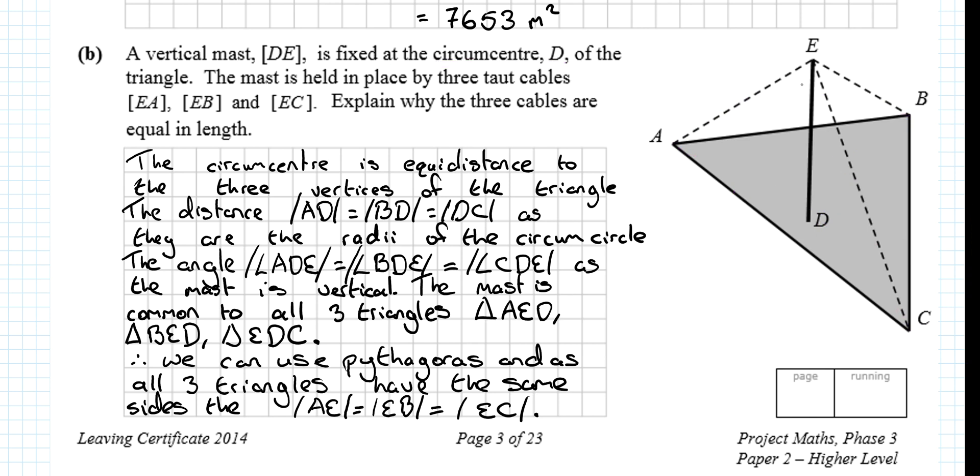Talking through what it wants. Explain why the three cables AE, EB, and EC must be the same length. The circumcentre is equidistant to the three vertices of the triangle. So these are equidistant. The distances AD, BD, and DC are all equal as they're the radii of the circumcircle. So the angle AD must be vertical. So this angle here, this angle here, and this angle here must be vertical.